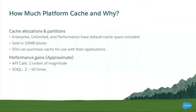Now let's go over how much Platform Cache you might need and why. If you're an enterprise, unlimited, or performance edition user, the good news is that you already have some cache storage for free allocated to your org — that's 10 megabytes for enterprise users and 30 megabytes for performance and unlimited edition users. If you need more space, it is sold in 10-megabyte blocks; you can contact your Salesforce account manager. ISVs can also purchase cache for their application, and because there's a namespace associated to your cache space, only the application related to that namespace can use it.